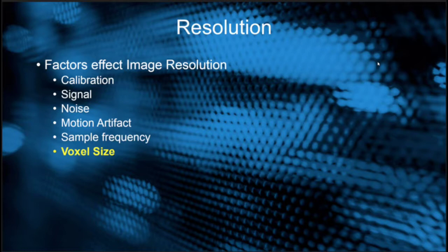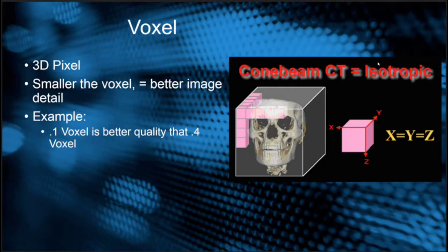Today we're going to be discussing voxel size and how voxel size can directly relate and affect the quality of your cone beam CT images. As we may know, a voxel is a three-dimensional pixel. A pixel is a picture element, and a voxel is a volume element. The smaller the voxel, the better the detail.